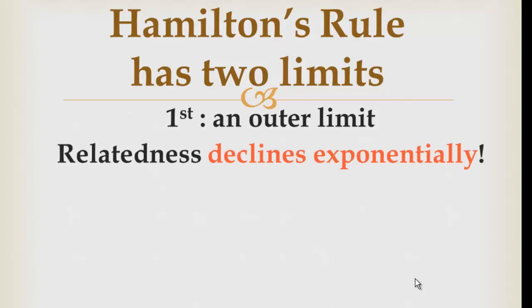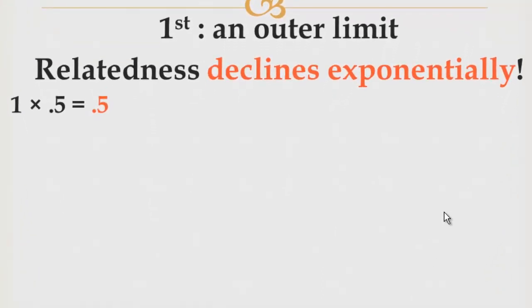Hamilton's Rule has two limits. The first one is an outer limit, based on the observation that relatedness declines exponentially as we go out to more and more distant kin. For example, my full sibling will be related to me at a 50% chance of sharing a gene identical by descent. So we multiply 1, my relatedness to myself, by 0.5, and we get 0.5, which is my relatedness to a full sibling.